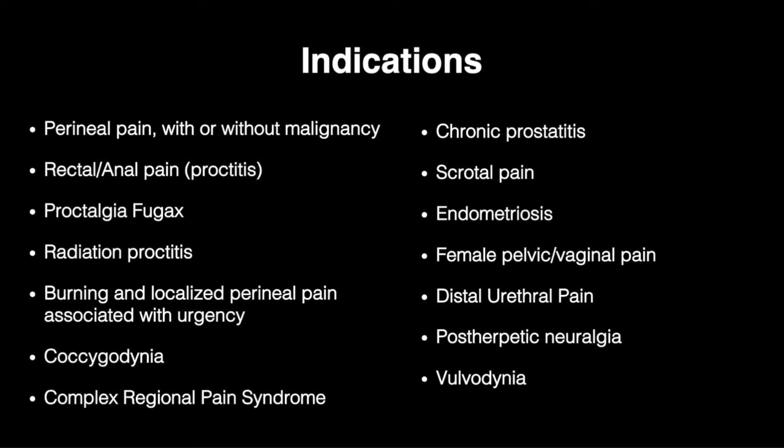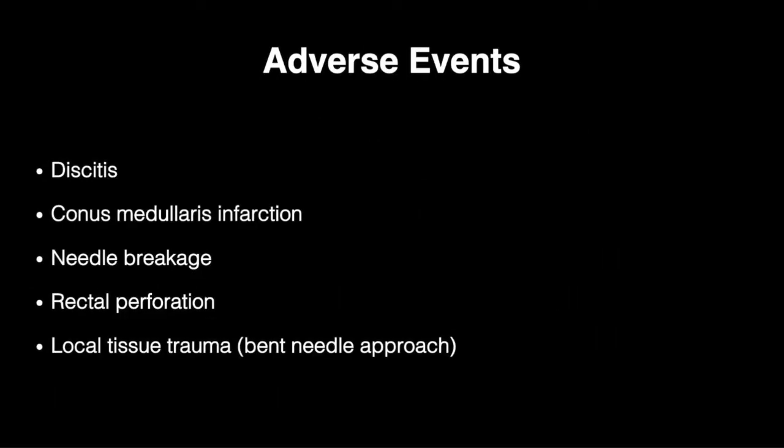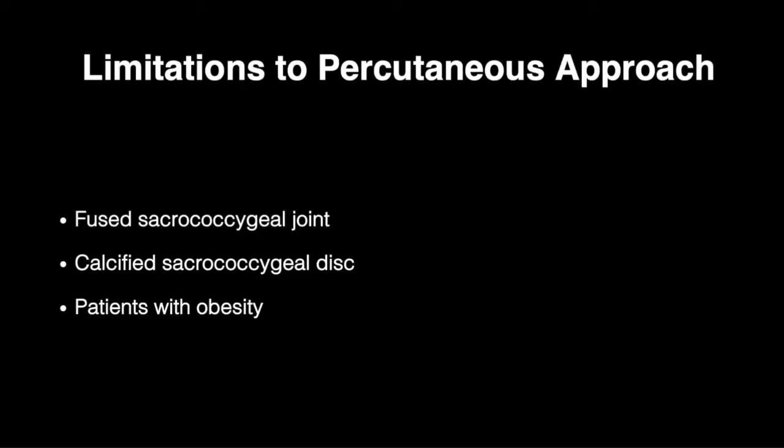Current indications for the ganglion impar block include anal and rectal pain etiologies including proctitis, chronic proctalgia, and proctalgia fugax. Although generally a safe procedure, ganglion impar block utilizing a percutaneous approach includes potential adverse events.